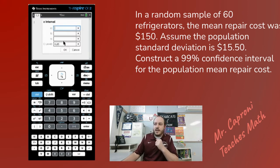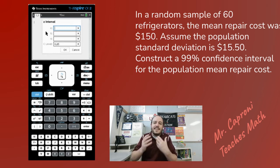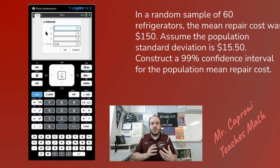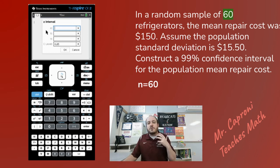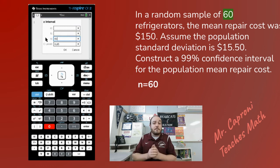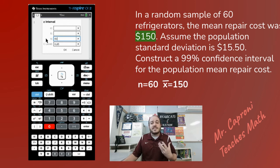So I'm going to switch Data to Stats and click OK. It's going to ask us for some of the information from our question. Starting off, it said that it was a random sample of 60 refrigerators — that is your sample size, represented by N. So we're going to type in 60 for N. Then the next thing it says is that the mean repair cost for that sample was $150. The symbol for your sample mean is X-bar, so we're going to plug in 150.